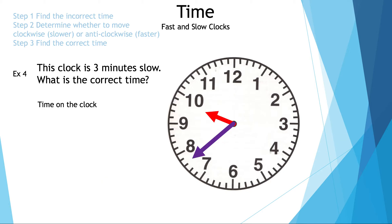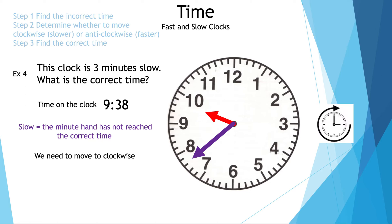Let's take a look at example four. This clock is three minutes slow — what is the correct time? The incorrect time on the clock is 9:38. Slow means the minute hand has not reached the correct time, so we go forward or clockwise. Moving forward three minutes: one, two, and three. The correct time is 9:41. You can also add three minutes to 9:38 to get 9:41.